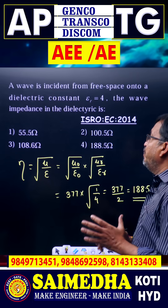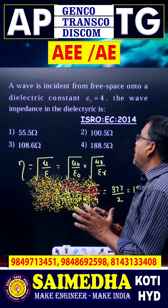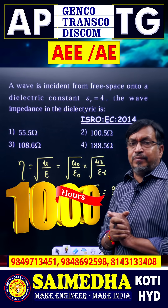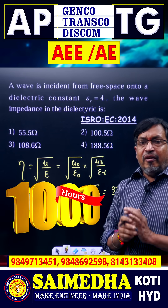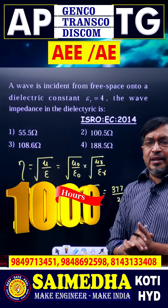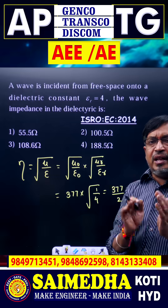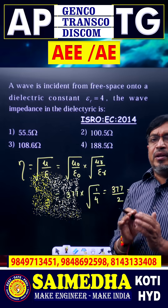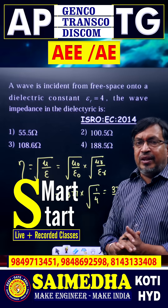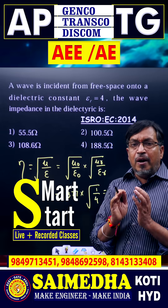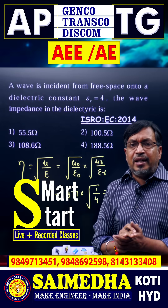Then the wave impedance in the dielectric medium. Wave impedance eta is the ratio of the magnitude of electric field strength to magnetic field strength.